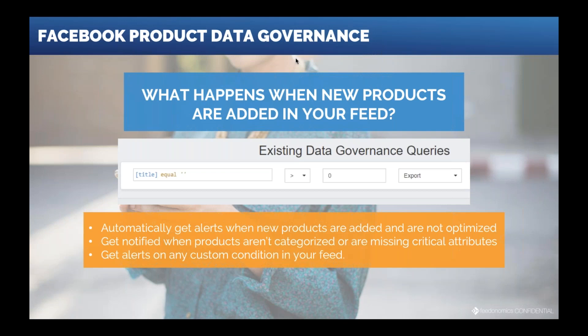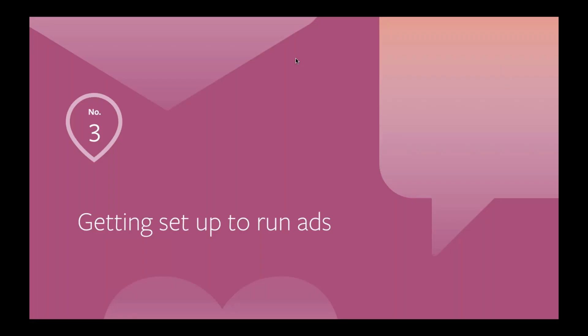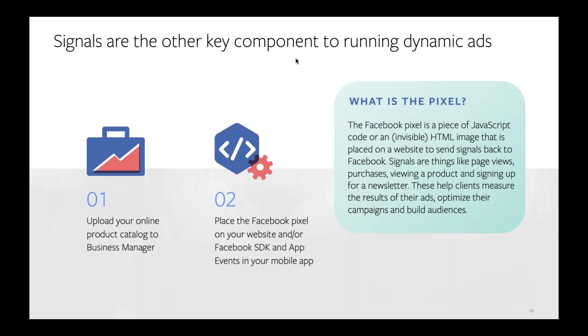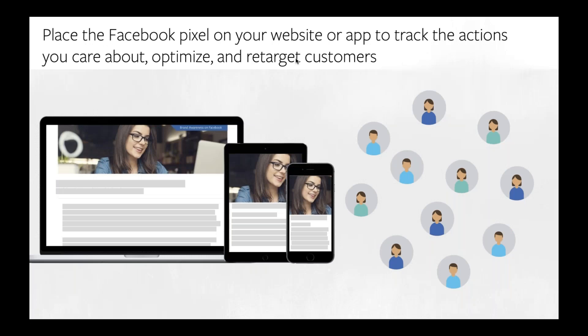I'll turn it back over to Emily. Thanks Brian — partners are a hugely valuable resource for customers to get set up to run dynamic ads. Once you have your catalog set up, there's one additional step before you can run ads: the pixel. We need to collect signals from your website or app. The Facebook pixel is placed on your website or app and sends signals back to Facebook so we can understand what behavior your customers are engaging with. The pixel allows you to track the actions you care about to optimize your ads and retarget your customers.